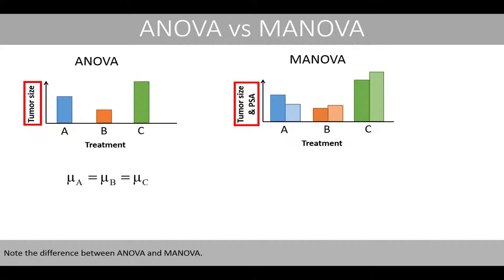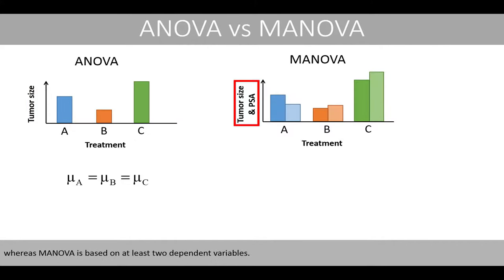Note the difference between ANOVA and MANOVA. ANOVA is based on only one dependent variable, whereas MANOVA is based on at least two dependent variables.